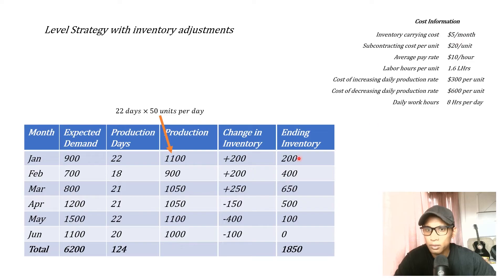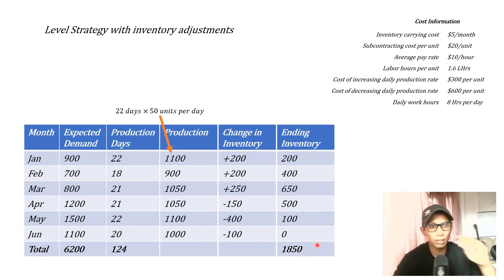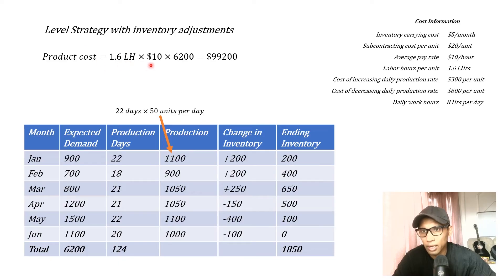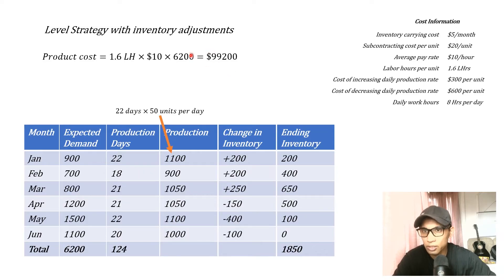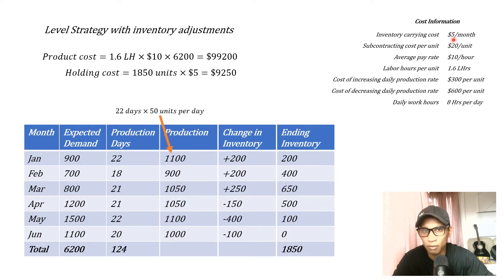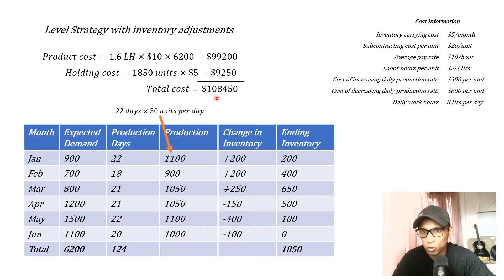The holding cost is $5 per unit per month. Summing the ending inventories: 200 + 400 + 650 + 500 + 100 + 0 = 1,850 units. Total holding cost = 1,850 × $5 = $9,250. Internal production cost = 1.6 labor hours × $10/hr × 6,200 units = $99,200. Therefore, total cost for the level strategy with inventory adjustments = $99,200 + $9,250 = $108,450.